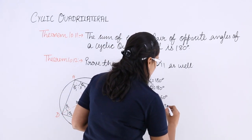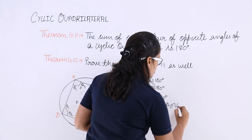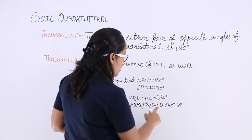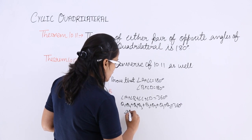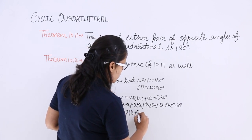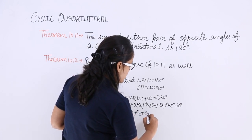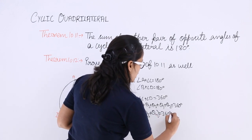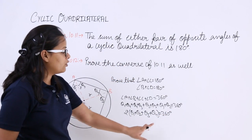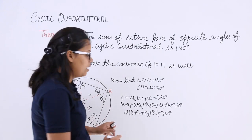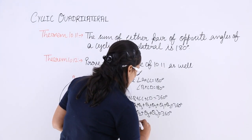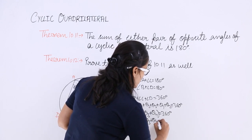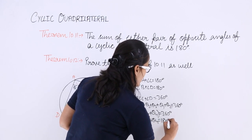So this total is equal to 360 degrees. Each theta has been repeated 2 times, so theta 1 plus theta 2 plus theta 3 plus theta 4 equals 360 degrees. When you divide by 2, you get theta 1 plus theta 2 plus theta 3 plus theta 4 equals 180 degrees.